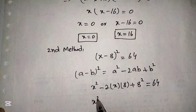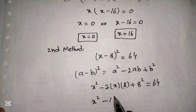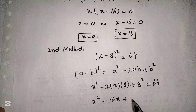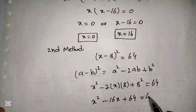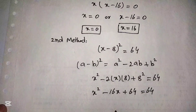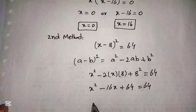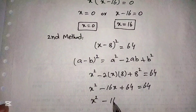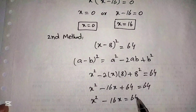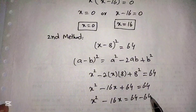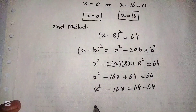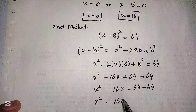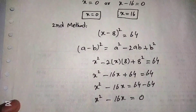Simplifying, we get x² - 16x + 64 = 64. Moving 64 to the right side: x² - 16x = 64 - 64, which gives us x² - 16x = 0.